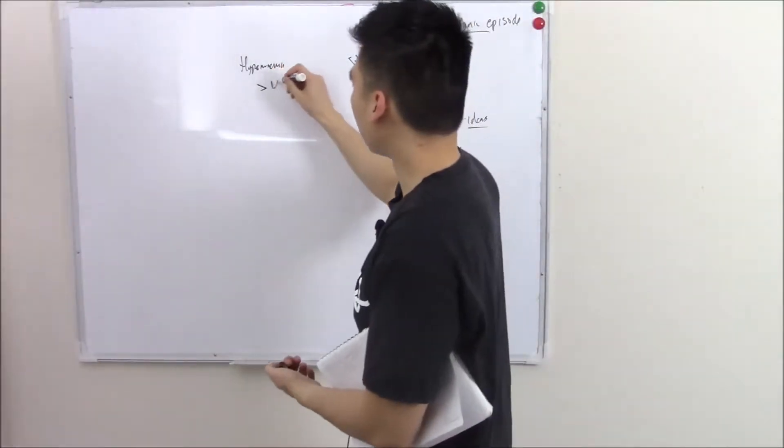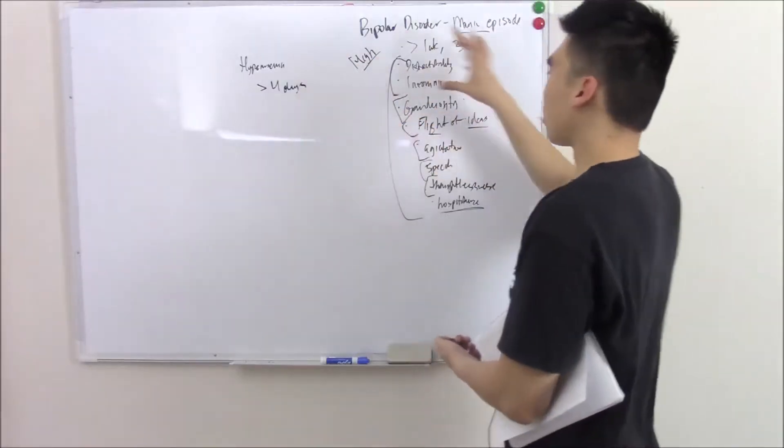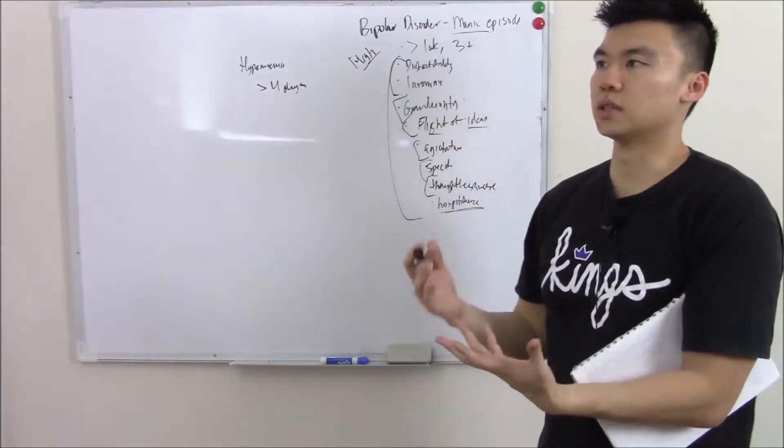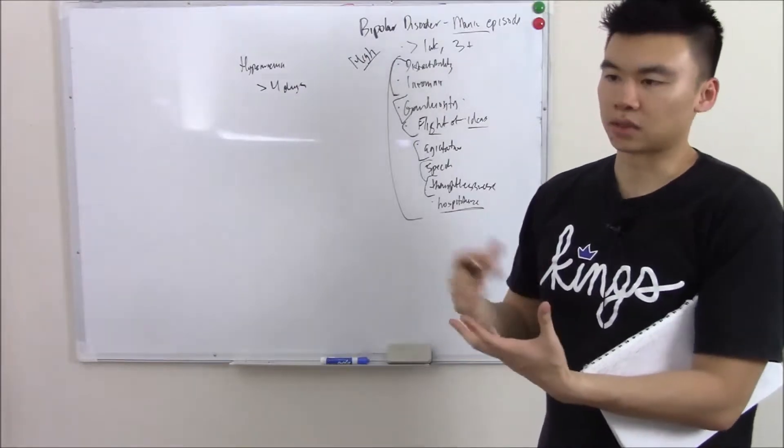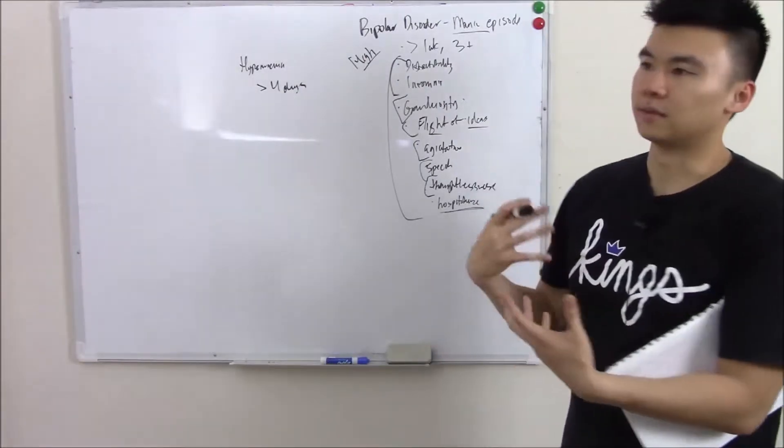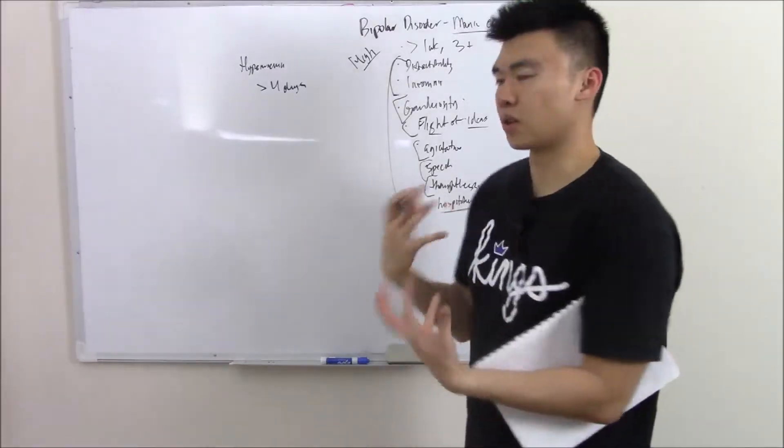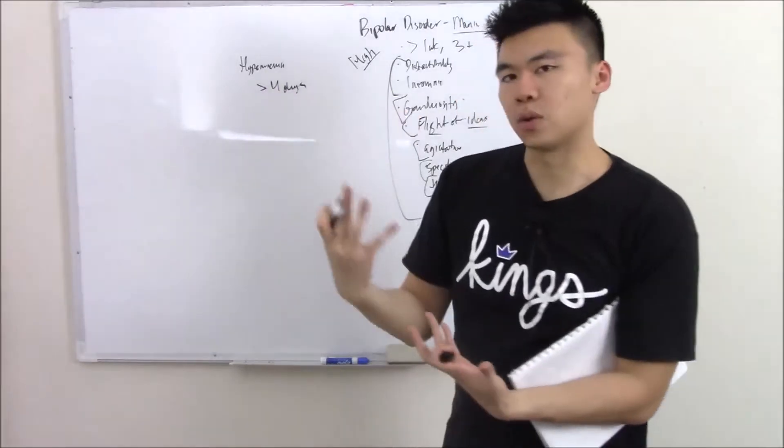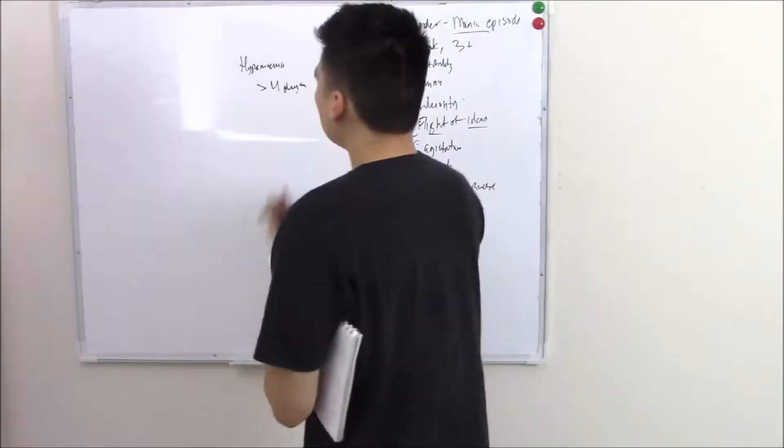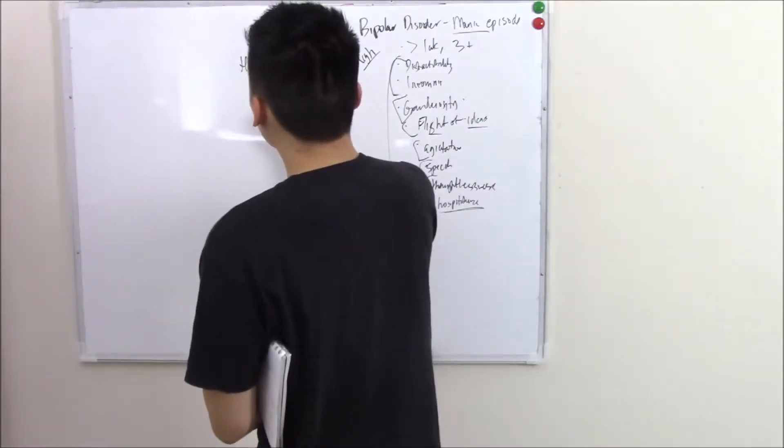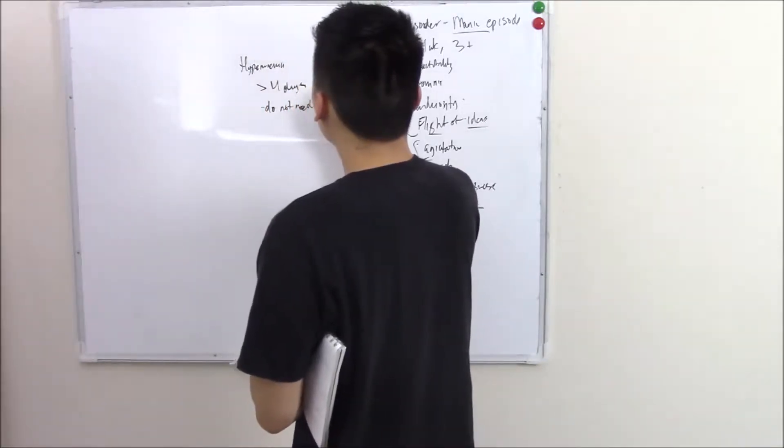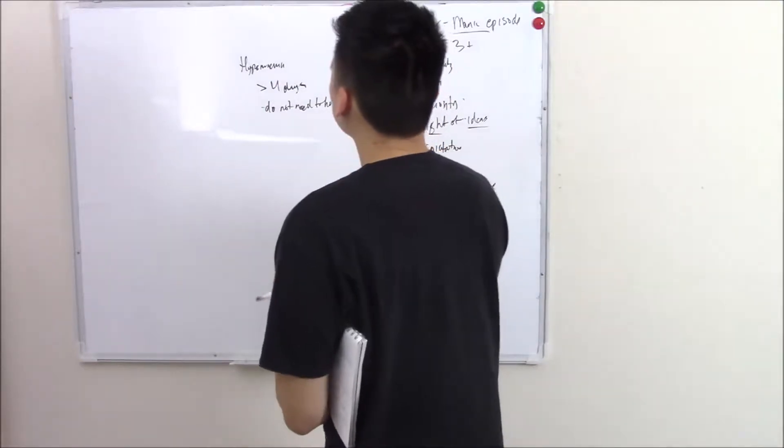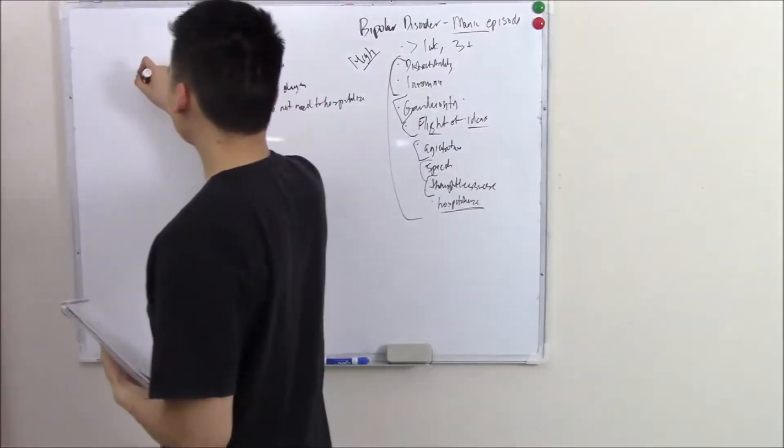So instead of one week, you have at least four days. Instead of at least three, you have some sort of milder form. So if they talk about a student that's, you know, instead of staying up all night, maybe stays up till three, works really hard for about a week, but still is coherent, comprehensive. It's not extravagantly spending money and stuff like that. That'd be hypomania, a little bit less severe. These you do not need to hospitalize. It's just not as severe. And then last but not least, another low you can have is depression.